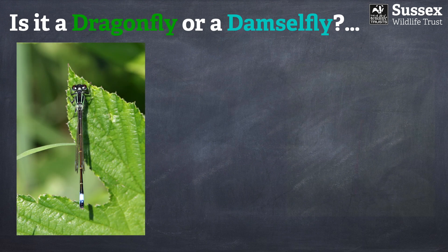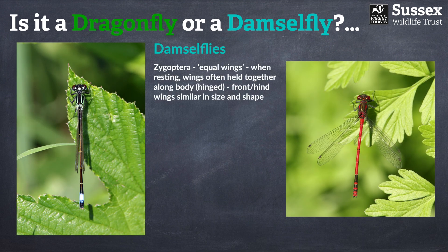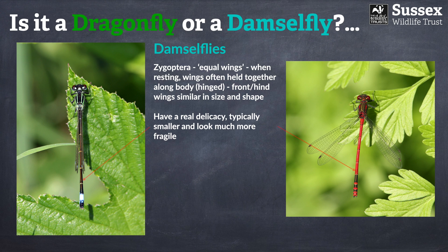Damselflies have their own defining characteristics. Belonging to the suborder Zygoptera, their wings are equal — looking at their front and hind wings, you'll see they're very similar in both size and shape. You'll often find that damselflies tend to hold their wings together along the body, because they're hinged, which is different from dragonflies that don't have this hinging. Damselflies are very different in look because they have a real delicacy to them — they're much smaller, much thinner, they look more fragile, and they're certainly a lot more dainty in appearance. In fact, there's even a damselfly called the dainty damselfly, which very much typifies this look.